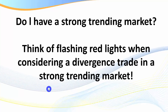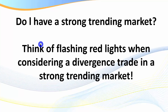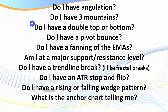One of the most important rules for staying out of a potential divergence trade is this: do I have a strong trending market? This is where it's easy to get absolutely hammered as a counter-trend trader trying to pick a top or a bottom. Think of flashing red lights when considering a divergence trade in a strong trending market. When you're in a strong trendy market, just be very aware — it's really easy to be chopped up in those circumstances.